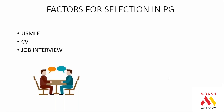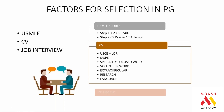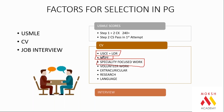The obvious question is: what are the factors for residency selection? First is Step 1 CK 240 plus, CS passing on the first attempt. Then of course the CV. Factors in the CV include good clinical rotations, a good LOR from an American doctor, good marks in first, second, third, and final year subjects. Do not ignore your medical school — take it seriously. Specialty-focused work is also important; for example, if you like pediatrics, you need to work with your pediatric department.